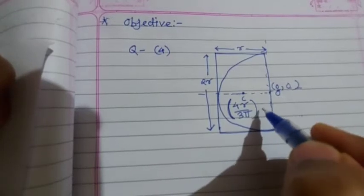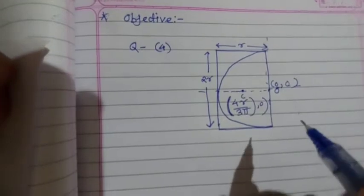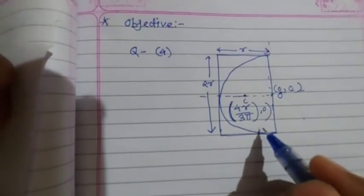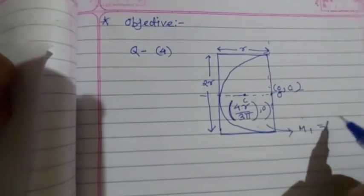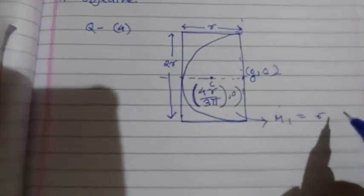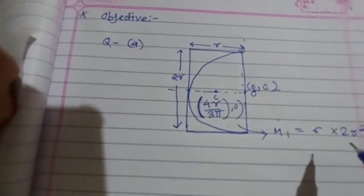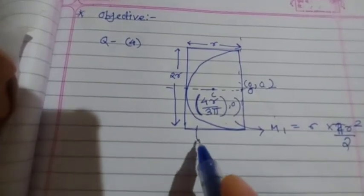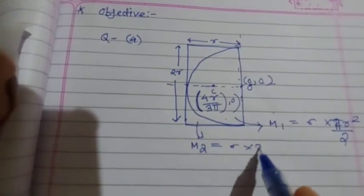Of course y-axis is zero. As these are made up of the same material, m1 equals density times area, which is σ times πr²/2. And m2 equals σ times 2r².